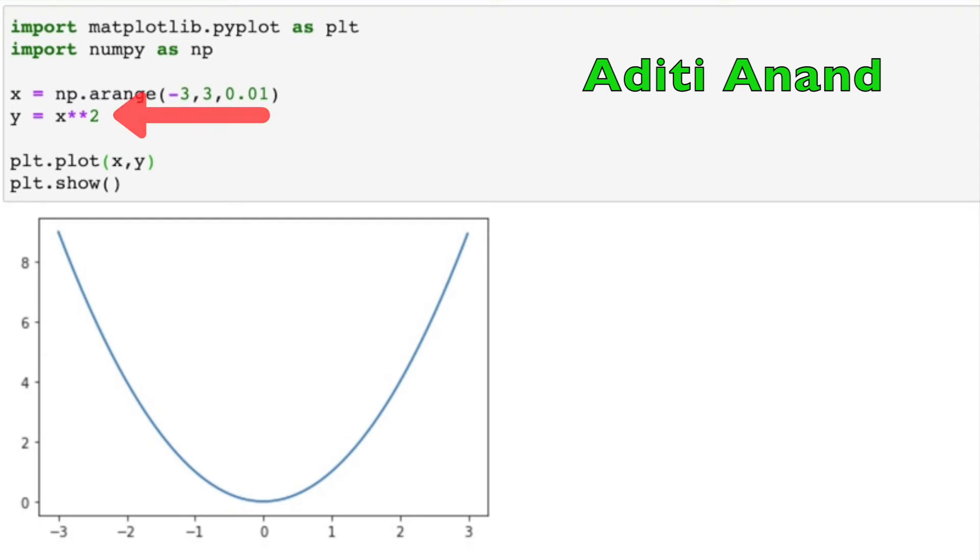After this, we assign y to x squared. The squared symbol is two asterisks followed by the number 2. Then, we can plot x and y values on the graph and finally call the plt.show function to display the positive parabola.